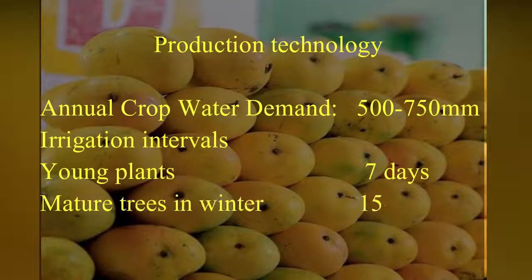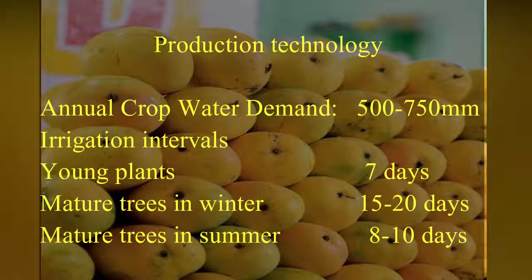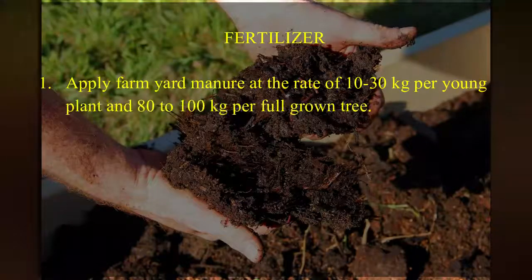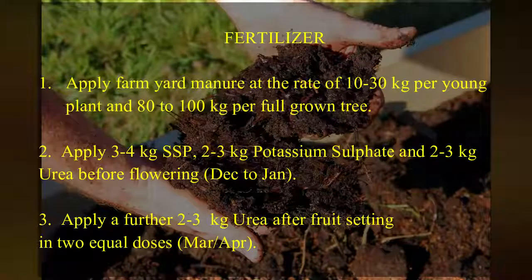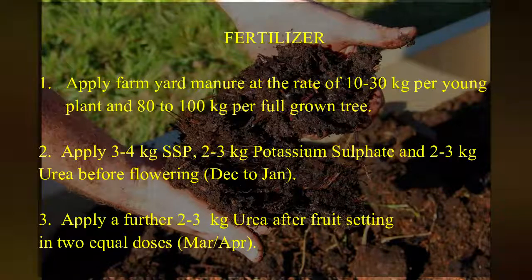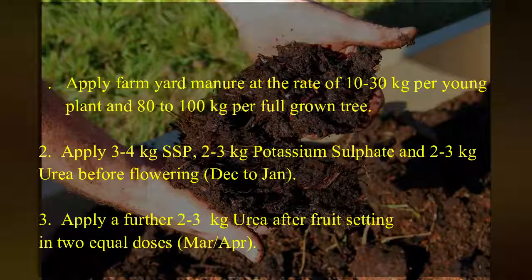Production Technology. Annual crop water demand: 500–750 mm. Irrigation intervals — young plants: every 7 days; mature trees in winter: every 15–20 days; mature trees in summer: every 8–10 days. Fertilizer: apply farmyard manure at 10–30 kg per young plant and 80–100 kg per full-grown tree. Apply 3–4 kg SSP, 2–3 kg potassium sulfate, and 2–3 kg urea before flowering. Apply a further 2–3 kg urea after fruit set in two equal doses in March/April.